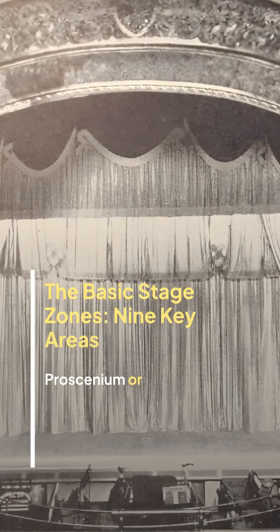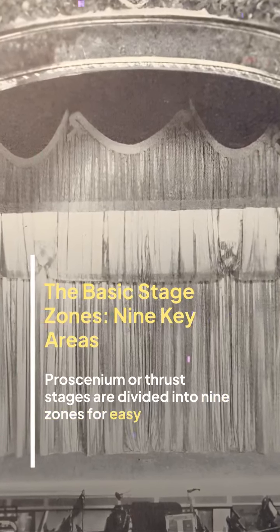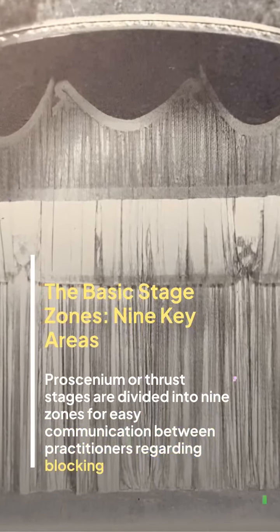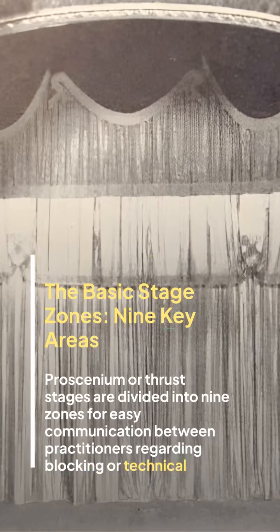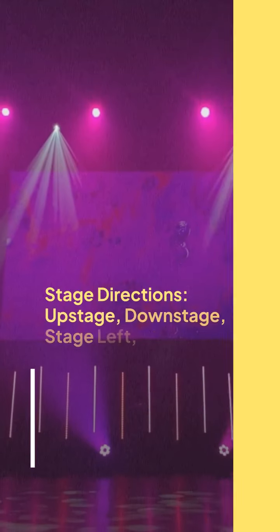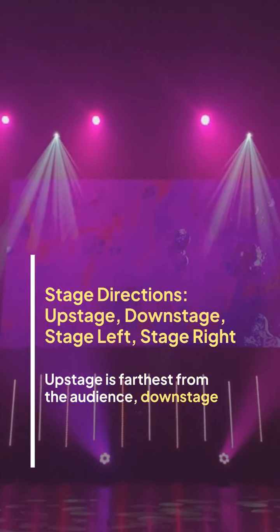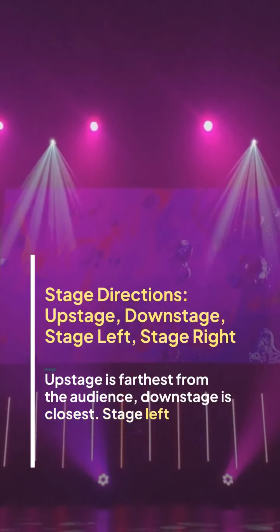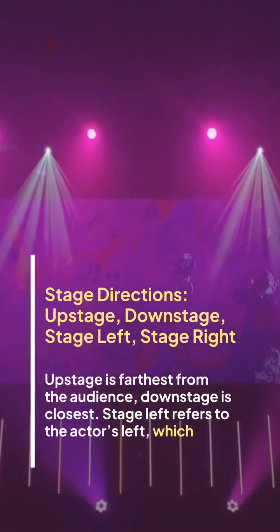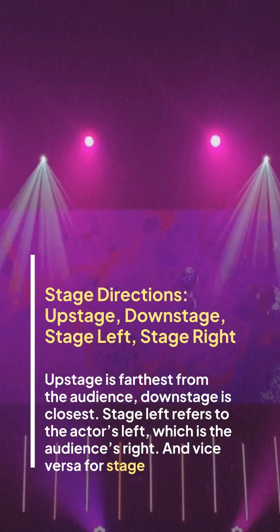Proscenium or thrust stages are divided into nine zones for easy communication between practitioners regarding blocking or technical effects. Upstage is farthest from the audience, downstage is closest. Stage left refers to the actor's left, which is the audience's right, and vice versa for stage right.